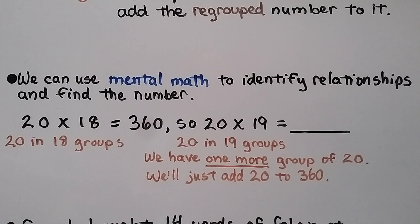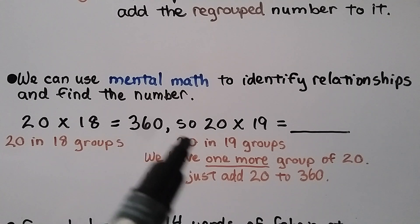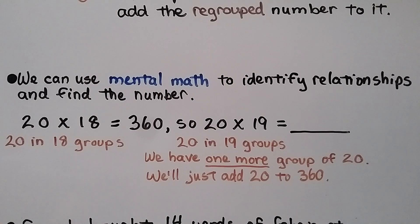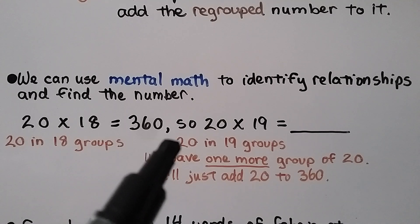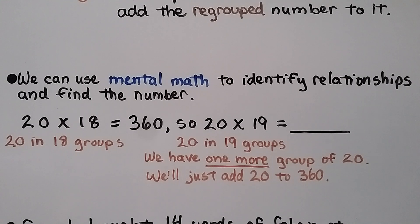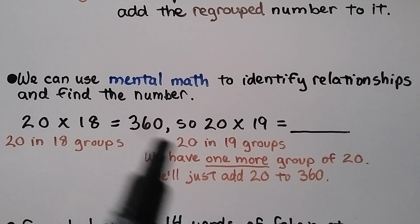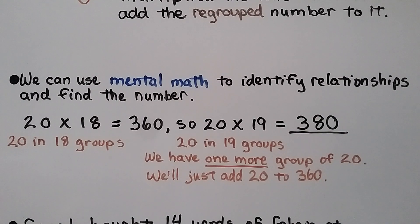We can use mental math to identify relationships. We know 20 times 18 equals 360. So what is 20 times 19? Since 20 times 18 means 20 in 18 groups, and 20 times 19 means 20 in 19 groups, we just have one more group of 20. We add 20 to 360 to get 380.